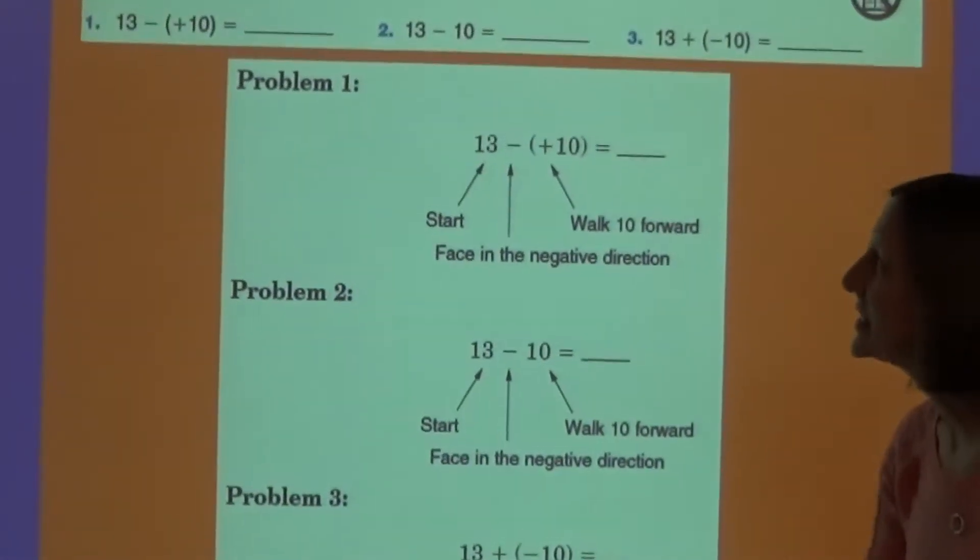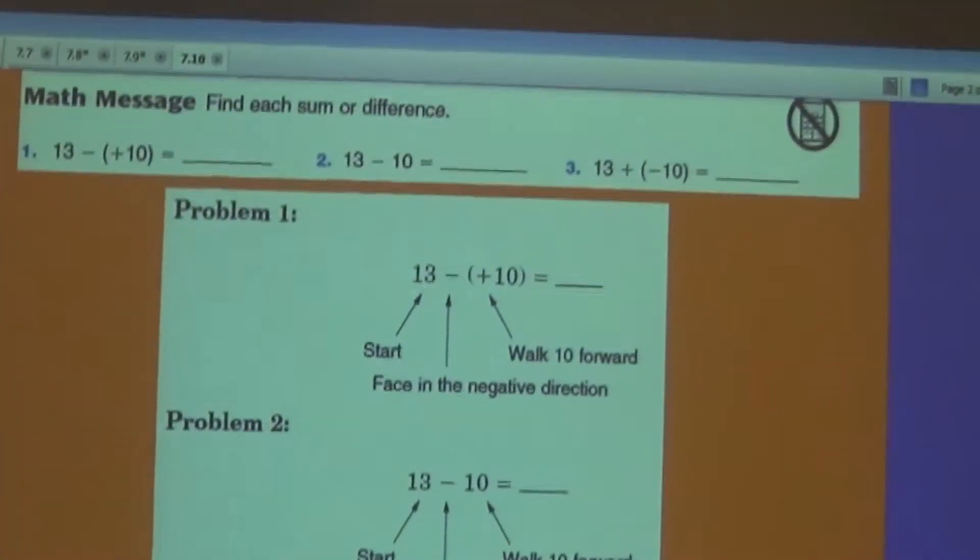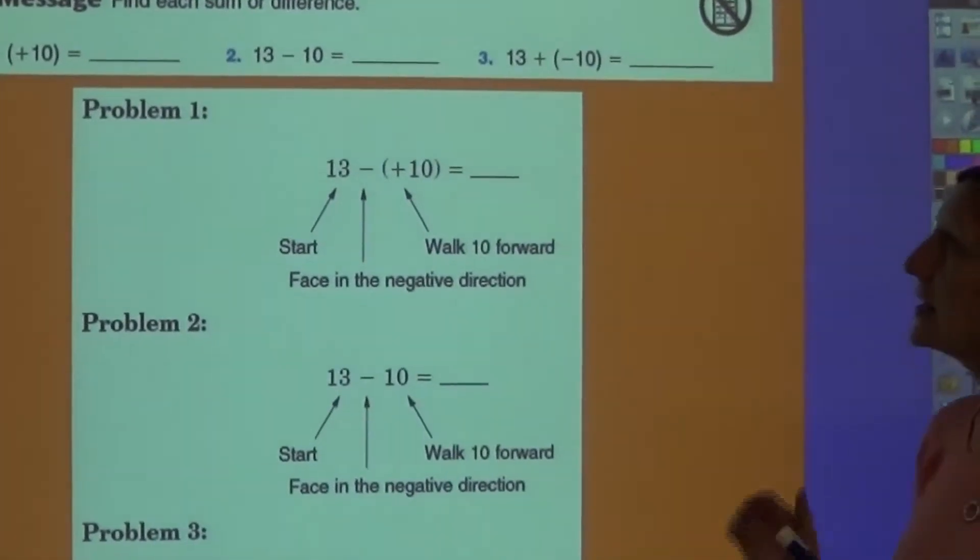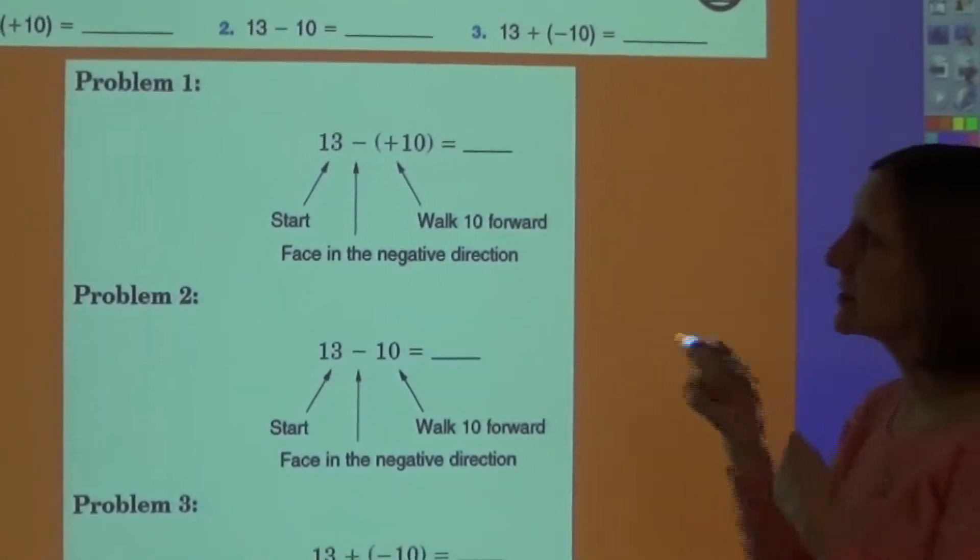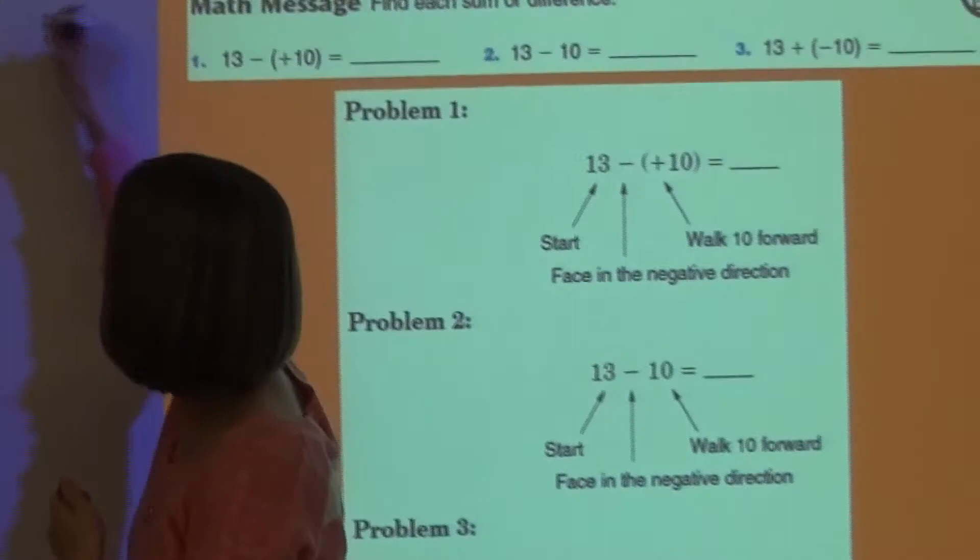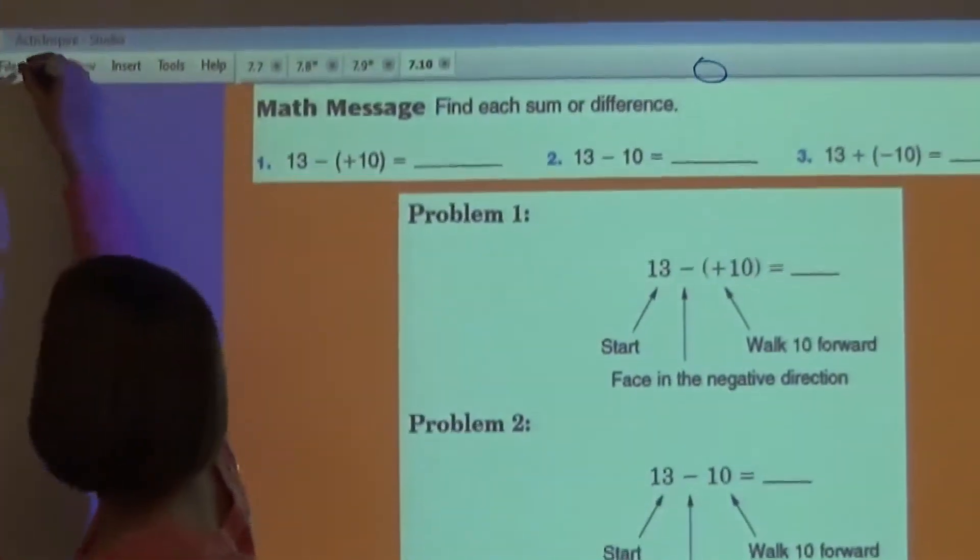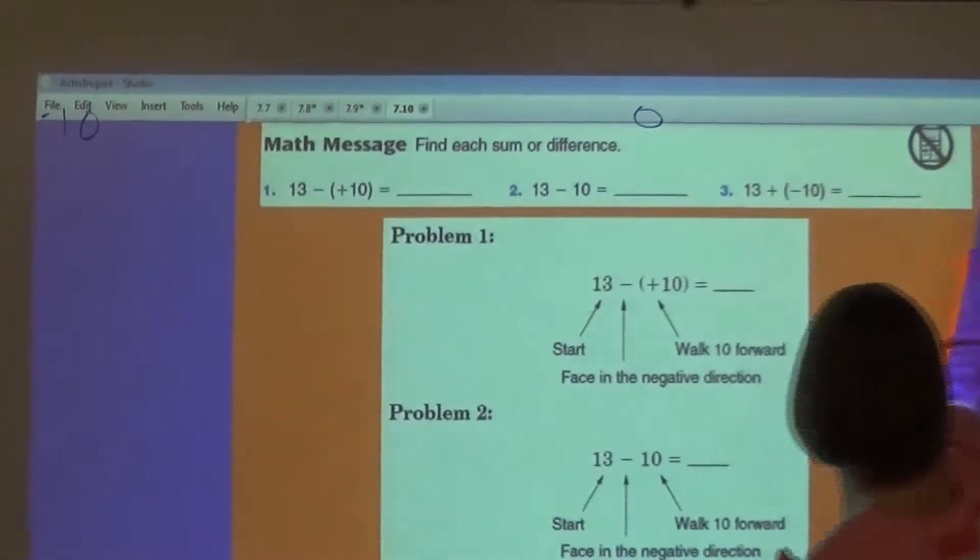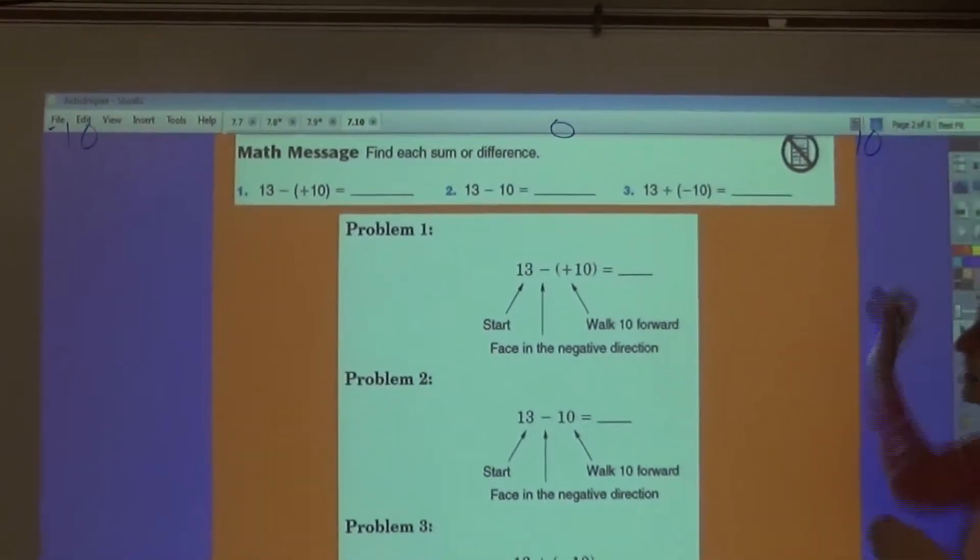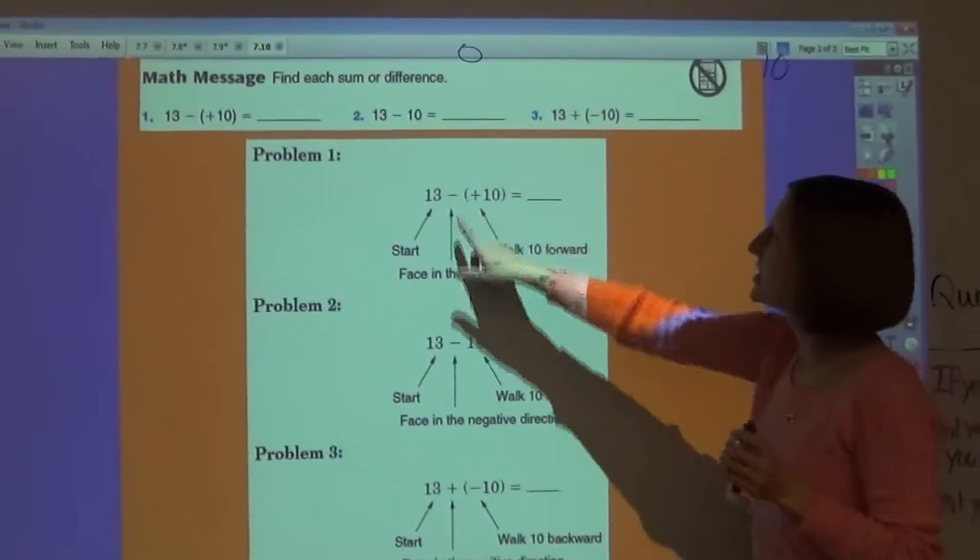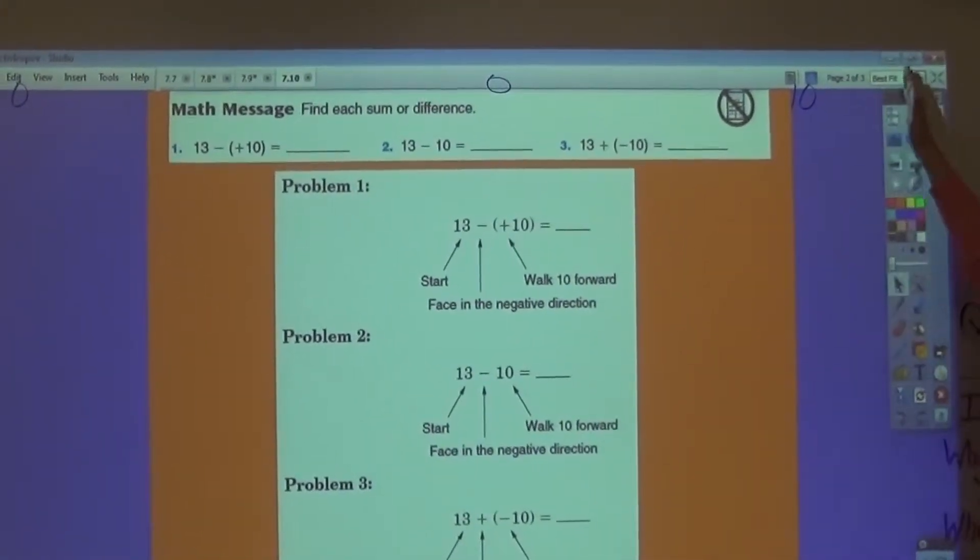For problem number 1, we have 13 minus a positive 10. If you had a number line, let's put 0 in the middle, and we have negative 10 and maybe positive 10, and it would continue to go on in both directions. I would want to start at positive 13, so probably about here.